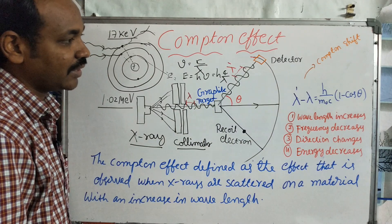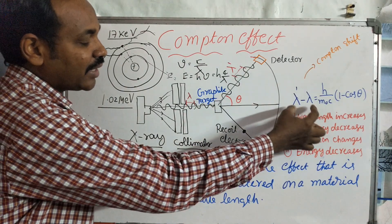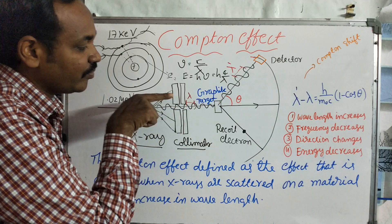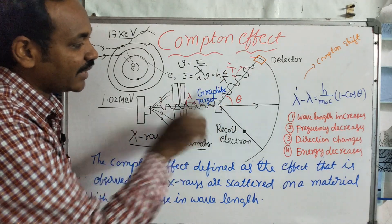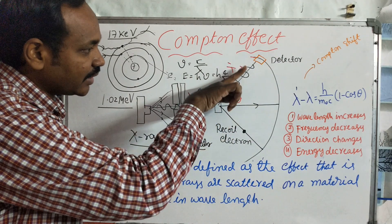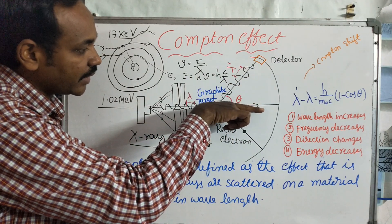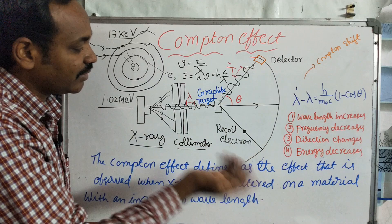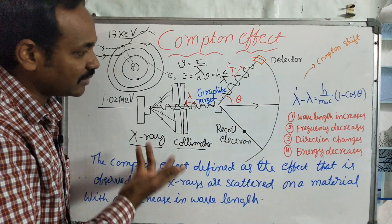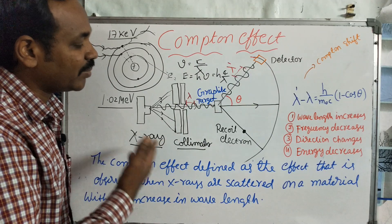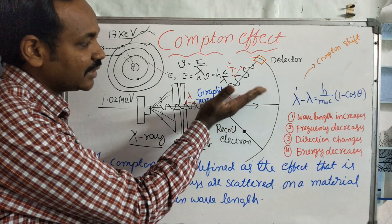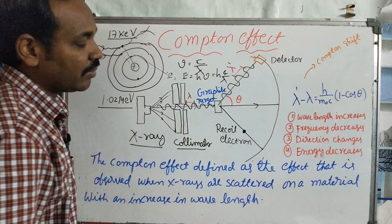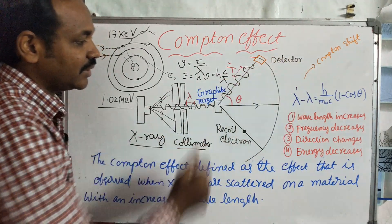The conclusions are: lambda dash minus lambda is the Compton shift. The Compton shift depends on theta — the scattering angle. When theta equals zero, there is no scatter — no Compton shift occurs. When theta is 45 degrees, cos 45 has a specific value, and lambda dash minus lambda gives a certain shift value.